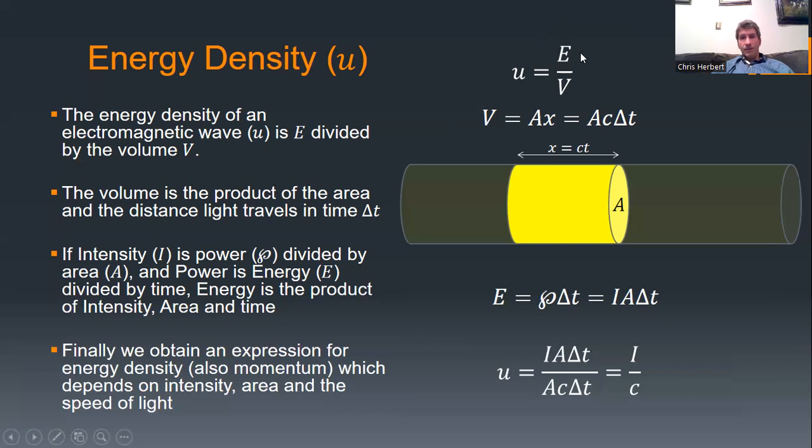We're going to take this energy density formula, U equals E over V, and convert that into something related to intensity. First, volume equals area times length, or the area of the cylinder times the length of the cylinder. As we said before, this is area times the speed of light times delta T. So that goes in the denominator. The energy, now I had to use a different P here because P can be pressure or power. The script P is for power. Power equals energy divided by time, so energy is power times time. But we also know power is related to intensity. Intensity is power divided by area.